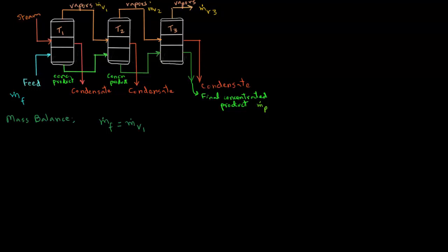So in our mass balance, we must account for the mass of those vapors. We have m.v1. Similarly, we have m.v2, vapors coming from the second effect, and m.v3, vapors coming from the third effect. Plus, of course, the mass flow rate of the concentrated product stream.